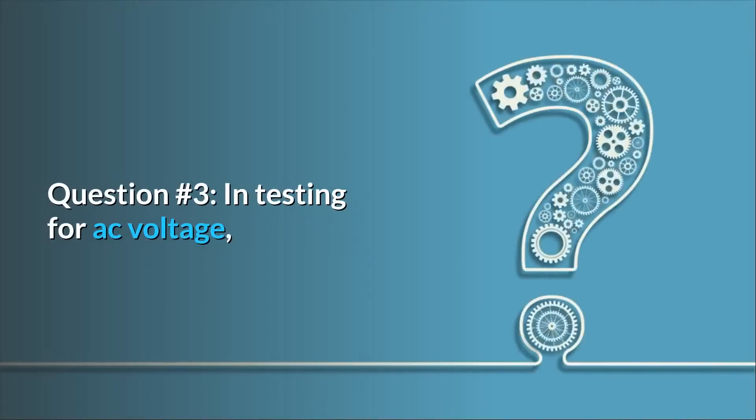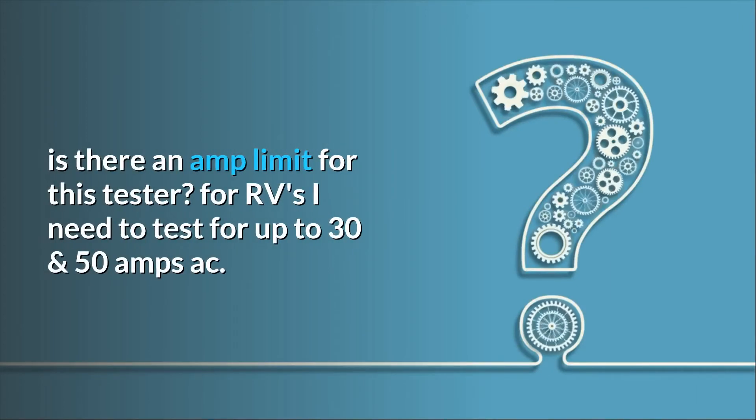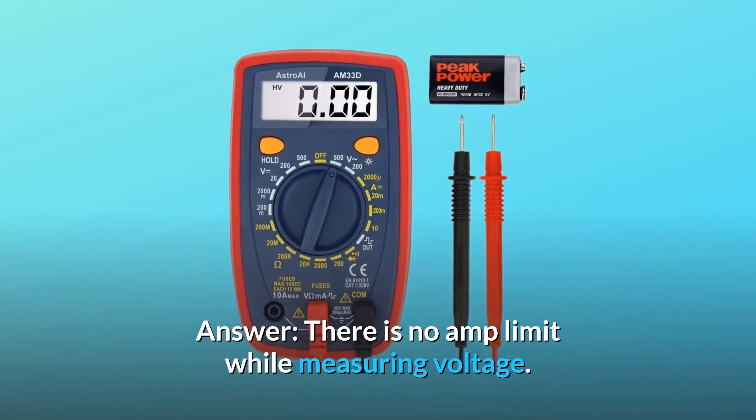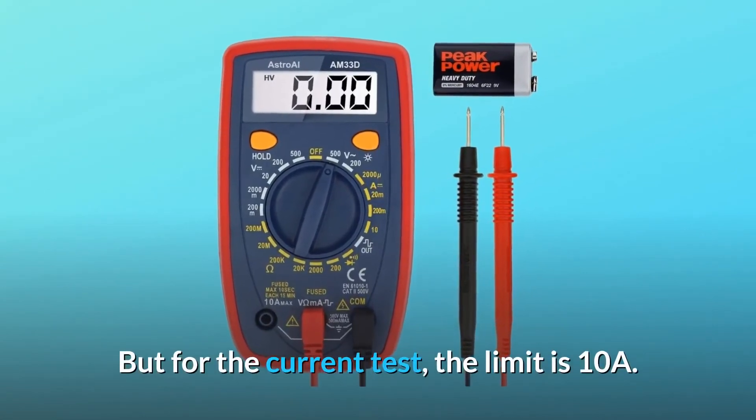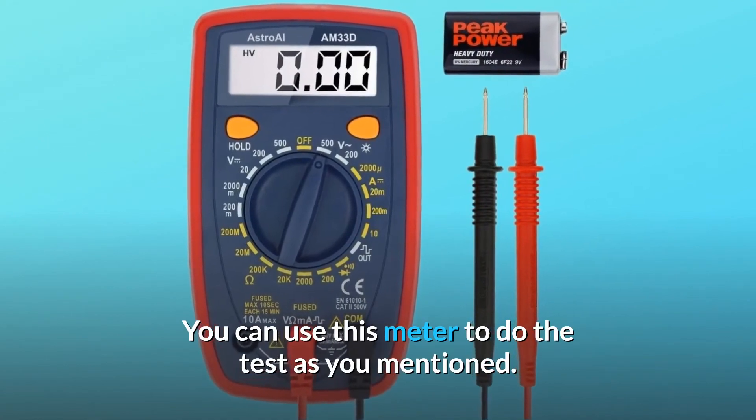Question number 3: In testing for AC voltage, is there an amp limit for this tester? For RVs I need to test for up to 30 and 50 amps AC. Answer: There is no amp limit while measuring voltage, but for the current test, the limit is 10A. You can use this meter to do the test as you mentioned.